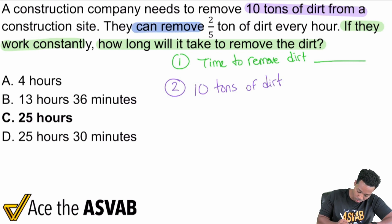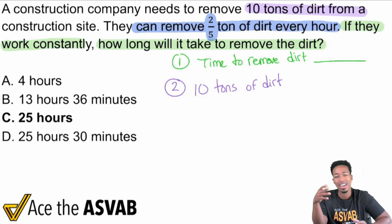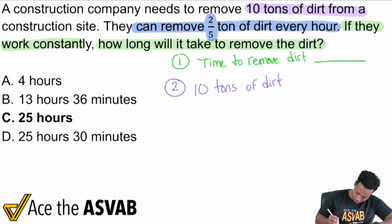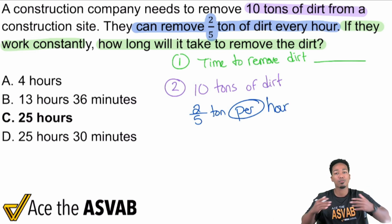And then we see here they can remove two-fifths of a ton of dirt every hour. When we see the phrase every hour, that's the same thing as saying per hour or for each hour. That keyword 'each' or 'per' or 'for every,' those all mean that we're either gonna be multiplying or dividing every single time. So let me write this out here: 10 tons of dirt, and you can remove two-fifths of a ton per hour.